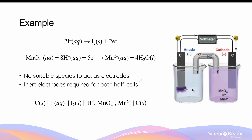Let's go through another example of a redox reaction whereby both oxidation and reduction require an inert electrode. The oxidation equation is the oxidation of iodide ions to form iodine solid, and the reduction equation is the reduction of permanganate — specifically the manganese atom in permanganate — to form manganese 2+ ions. In both reactions, we do not have any appropriate chemical species that can conduct electrons. The manganese ion is not a solid, so it is not suitable as a surface for conducting electron flow. So what we need is two inert electrodes — for example graphite, labeled as carbon — submerged in both solutions.